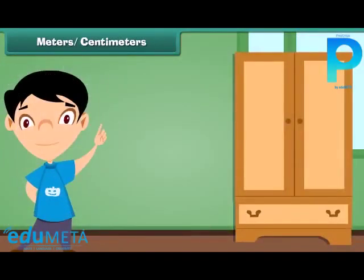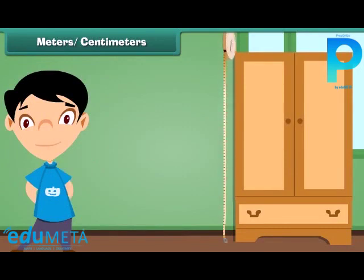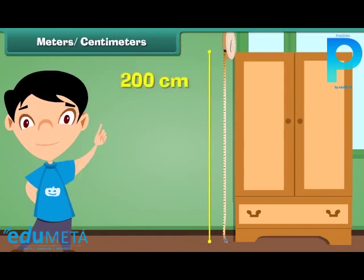We can measure the height of the almira by using measuring tape. The height of the almira is 200 centimeters. Therefore, we can say that the height of the almira is 2 meter.